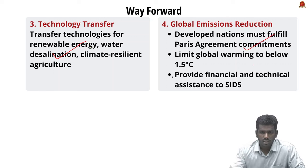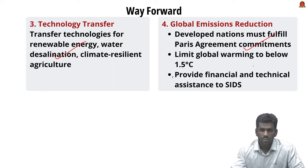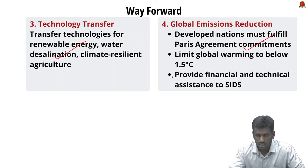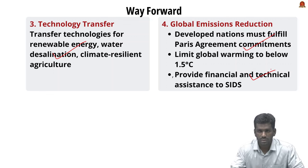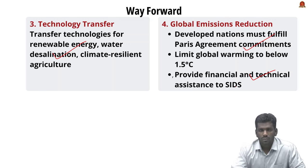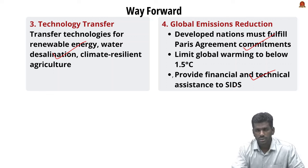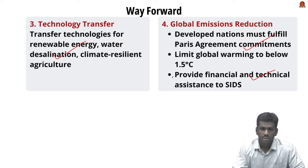Developed nations — particularly major emitters — must fulfill their commitments under the Paris Agreement to limit global warming below 1.5 degrees Celsius. They must also provide necessary financial and technical assistance to small island developing states struggling with climate change. On one hand, developed and developing nations must reduce their emissions; on the other hand, small island states must improve their adaptation and mitigation efforts.